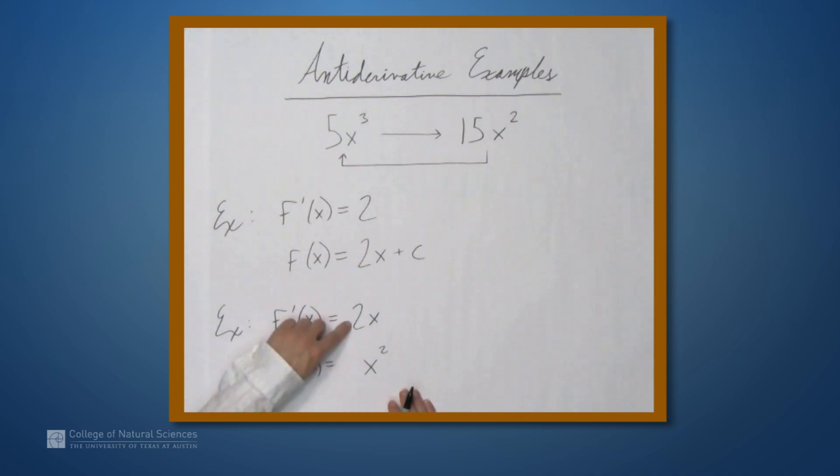Now we have to figure out what coefficient we want out front to make sure that we get a 2. When we take the derivative of x², the 2 comes down, and we subtract 1 from the exponent. So we have x times 2. So this actually gives us everything we need. But let's not forget the plus c.